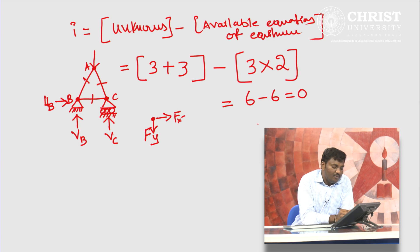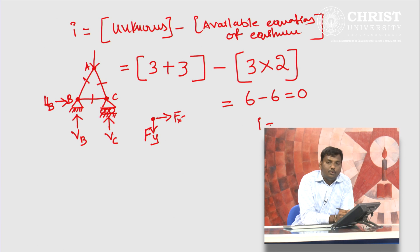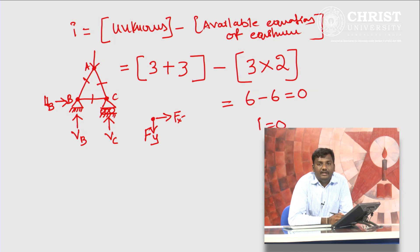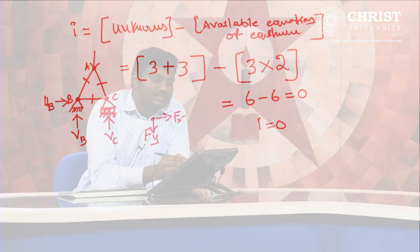If I works out to be 0 then we call such a structure a statically determinate structure. If I works out to be greater than 0 then we call it a statically indeterminate structure. If I is less than 0 then we call such structures unstable structures. The example we have considered here is a stable and statically determinate structure.